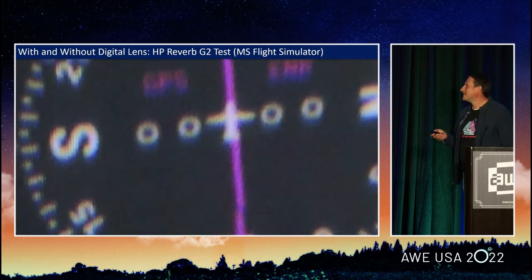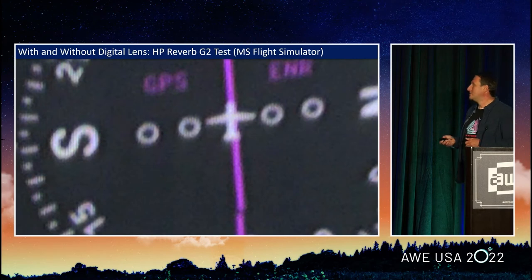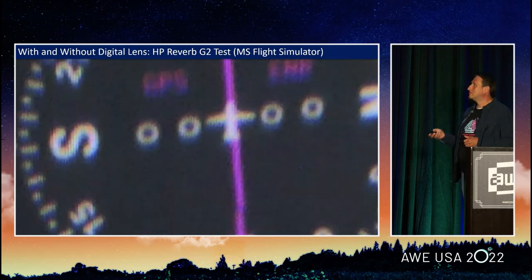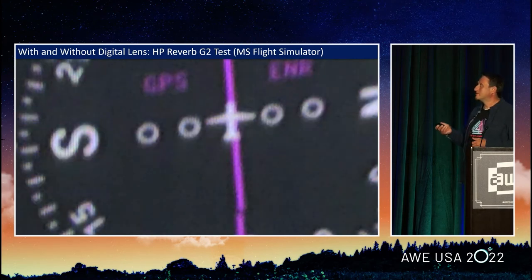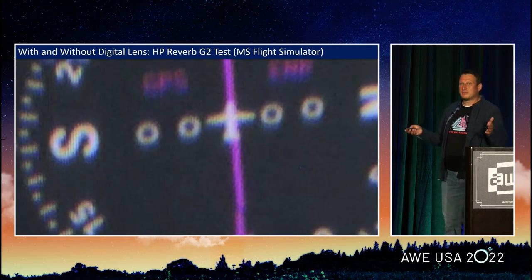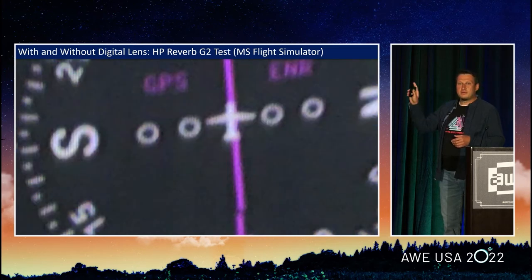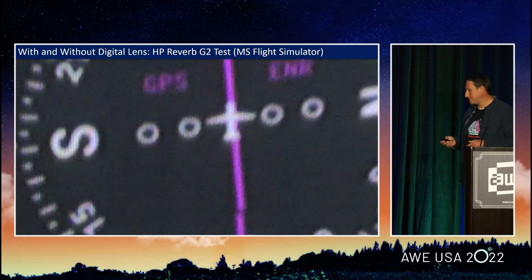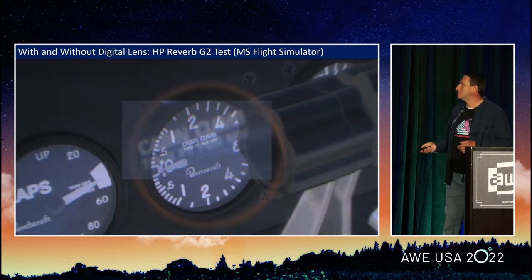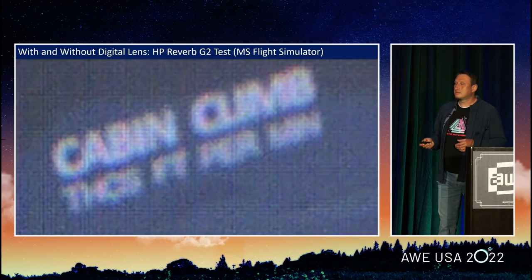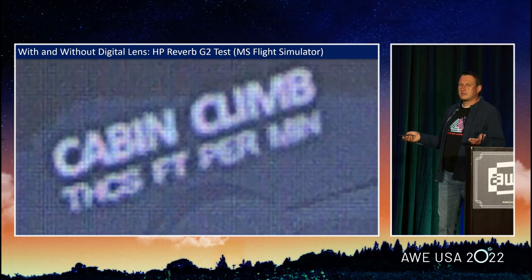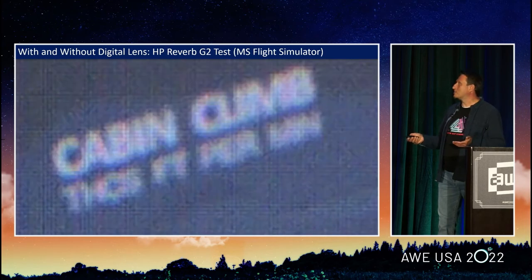HP Reverb G2 — a closer look. The device as-is versus with the digital lens applied. Imagine you are in pilot training. What do you prefer — this, or this? If you are going to buy an HP device, don't let them fool you. You cannot read it — now you can. You cannot read it — now you can. I just cannot stop switching those slides.